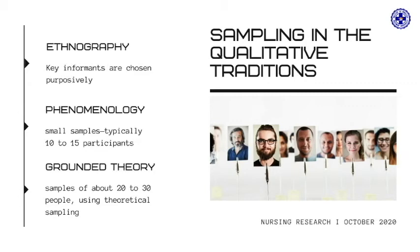For phenomenological studies, phenomenologists tend to rely on very small samples, typically just 10 to 15 participants. One key principle guides sample selection: all participants must have experienced the phenomenon and must be able to articulate what it is like to have lived that experience. Although phenomenological researchers seek participants with targeted experiences, they also want to explore diversity of individual experiences, specifically looking for people with demographic or other differences who have shared a common experience. Grounded theory research is typically done with samples of about 20 to 30 people using theoretical sampling, with the goal of selecting informants who can best contribute to the evolving theory.